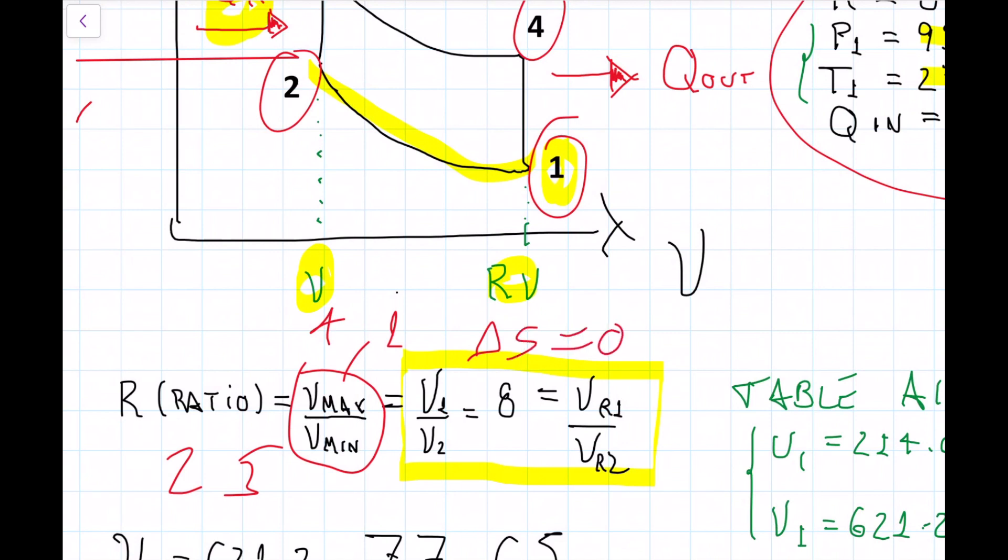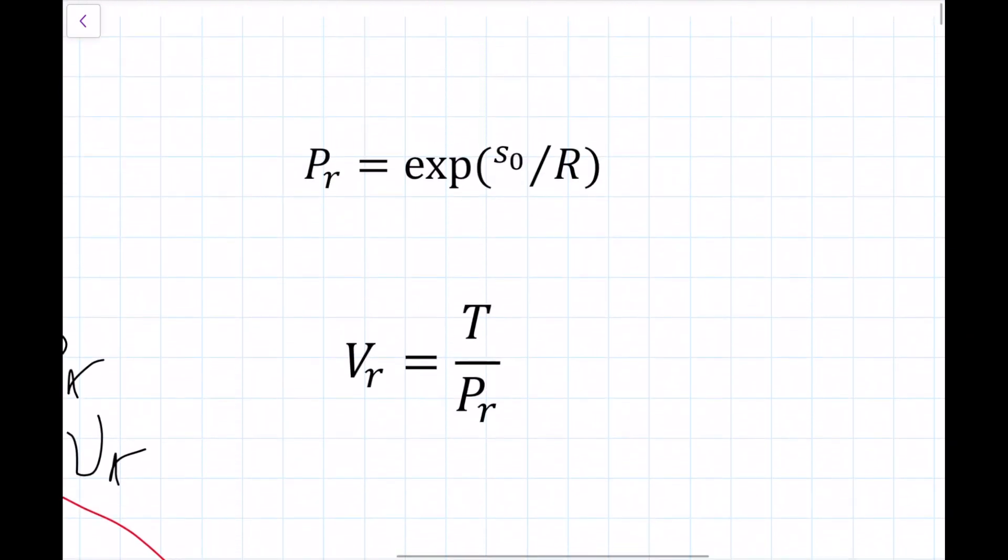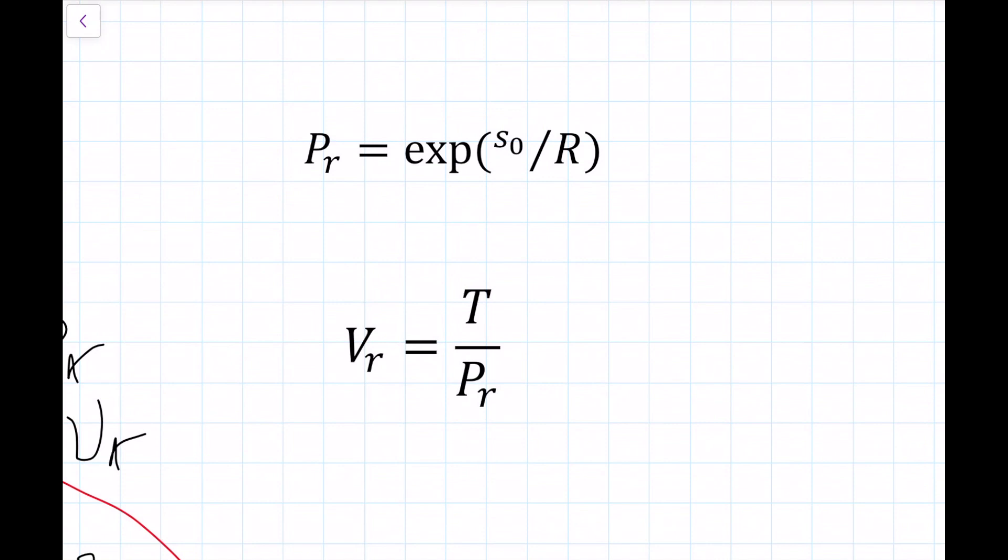So whenever, this is the relationship here, whenever we have an isentropic transformation. The ratio between the volumes equals the ratio between the relative specific volumes. Likewise, if we were to have pressure, the same thing applies. The ratio between the pressures on an isentropic process equals the ratio between the relative pressures. What am I saying? Why am I telling you guys that? Well, before I move on, just please remember this only is valid when it's isentropic. So when delta S is zero. If it's not isentropic, you cannot use this relationship here in yellow. Please remember that. Because you guys love to forget this.